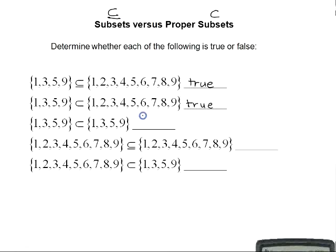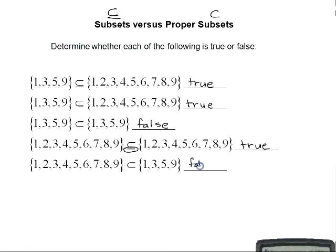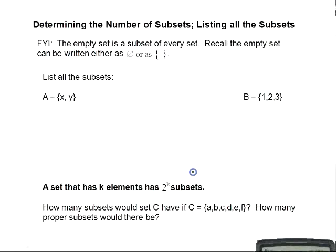The set {1, 3, 5, 9} is a proper subset of {1, 3, 5, 9} — false, because these sets are equal and to be a proper subset the sets cannot be equal. The set {1, 2, ..., 9} is a subset of {1, 2, ..., 9} — true, because for subset it is okay for the two sets to be equal. The set {1, 2, 3, 4, 5, 6, 7, 8, 9} is a proper subset of {1, 3, 5, 9} — false, because there are elements in the first set that are not elements of the second.